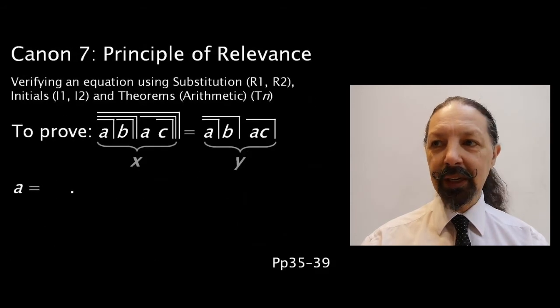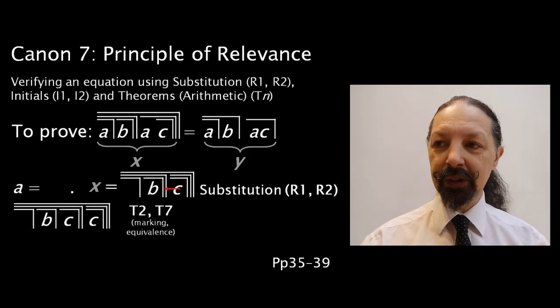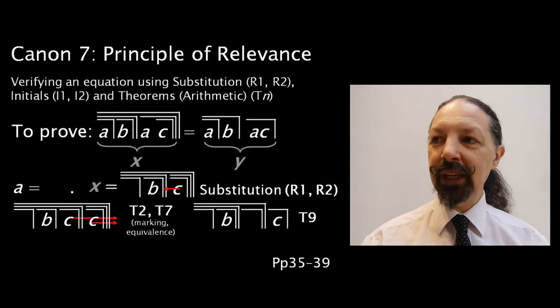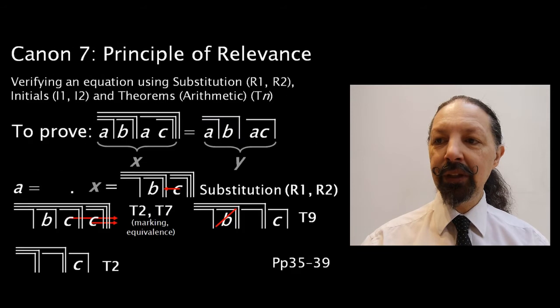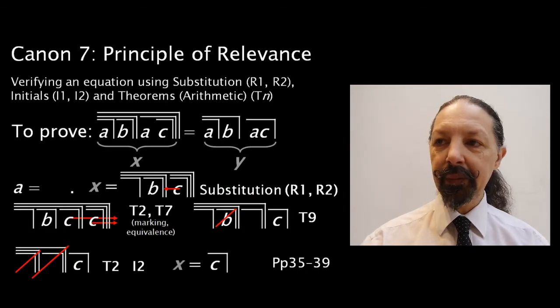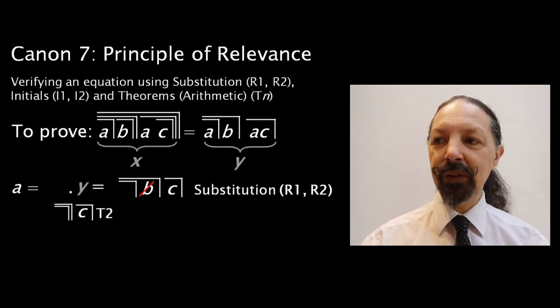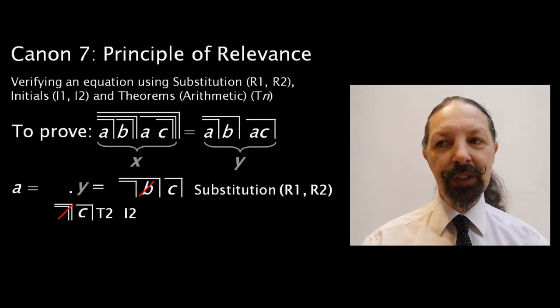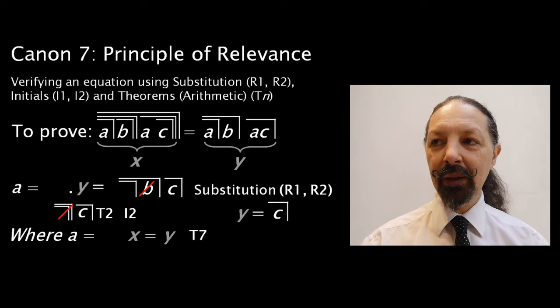Now, what happens when A is an unmarked state? Well, we take it out of X. We move C to the left, C mark to the left, because it's got an empty cross on the left, by these two theorems. Then we do the same thing. We use our T9, which is the equivalent of J2. We remove anything that's next to an empty cross, by T2. And we cancel the pairs of nested marks, by I2. So X equals C mark. Now, what happens when we substitute in Y? We remove the A's. We take out anything that's next to an empty cross, by T2. And remove by I2. And Y equals C mark. Where A is equal to an unmarked state, both X and Y are equivalent to C mark. Therefore, X equals Y, by our Einstein theorem.